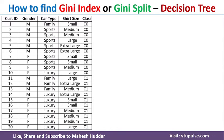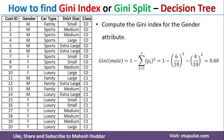Now, coming to gender — gender has two possibilities: male and female. We consider male examples first. There are 10 male examples in total; the first 6 are C0 and the remaining 4 are C1. So, Gini(male) = 1 − (6/10)² − (4/10)² = 0.48.